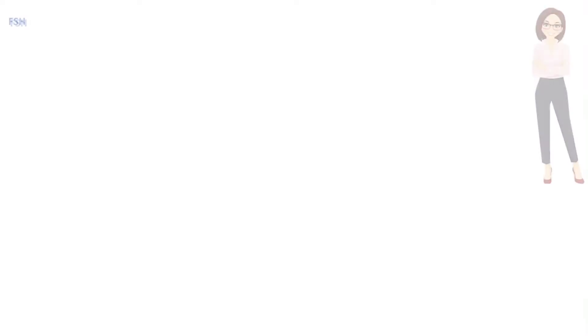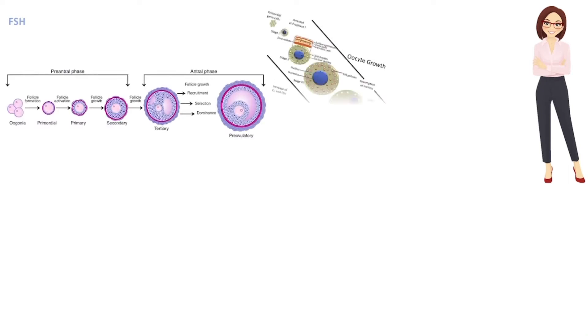In females, FSH stimulates the development of follicles and oocytes while also stimulating the secretion of estradiol.